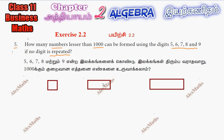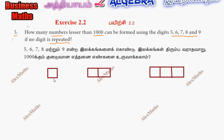So we consider three cases: one box, two boxes, and three boxes. In the first case, for single-digit numbers, the options are 5, 6, 7, 8, 9 — that gives us 5 choices. So there are 5 chances for single-digit numbers.